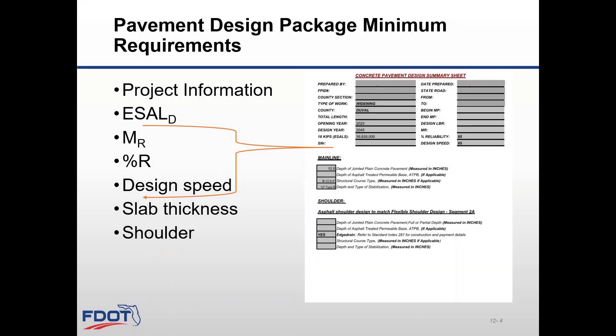As part of the Design Summary Sheets, the minimum required information should include the following project information: State Road Number, Milepost Begin and End Limits, FPID, Name of the Pavement Engineer that prepared the report, Type of Work, County, Date the report was prepared, ESAL D data, Opening and Design Years, Truck Percentage, Resilient Modulus, Percentile Reliability, Design Speed, Slab Thickness, and Shoulder and Edge Drain Information. This is an example from a District 2 design report format.